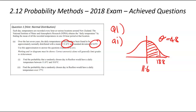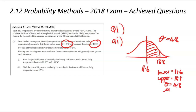This is where we grab out our graphics calculator. We need to know a lower limit — that's the lowest part of our shaded area, which is the mean, 11.6. We also need an upper, which is 18.8. Then standard deviation, 4.8, and mean, 11.6. When you put that into your graphics calculator, you're going to get a probability of 0.4332, rounded to 4 decimal places. That's part I for this question.